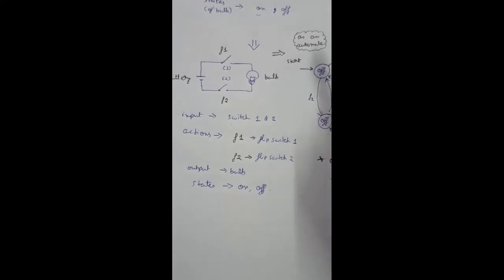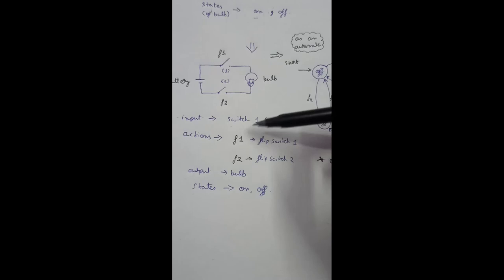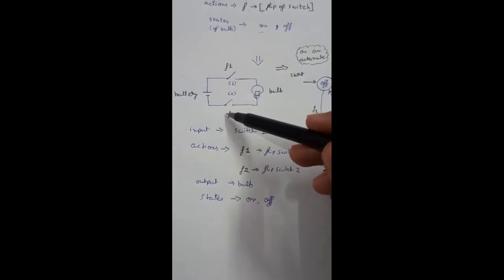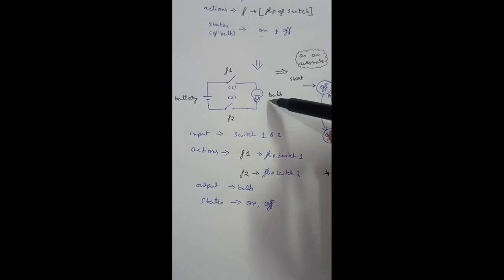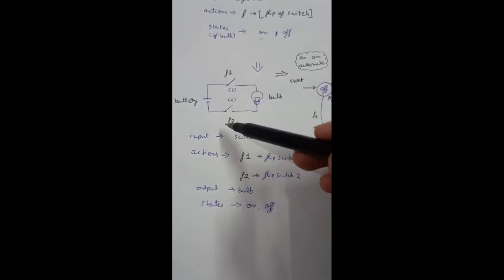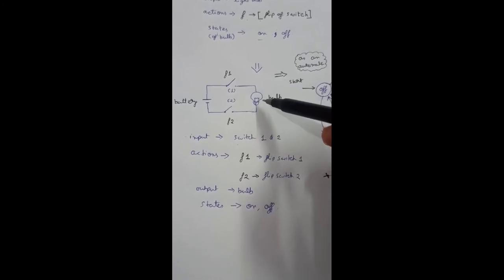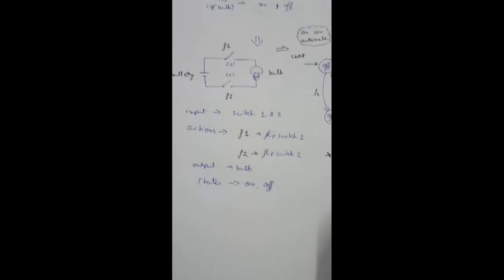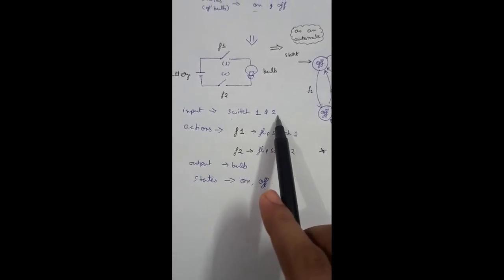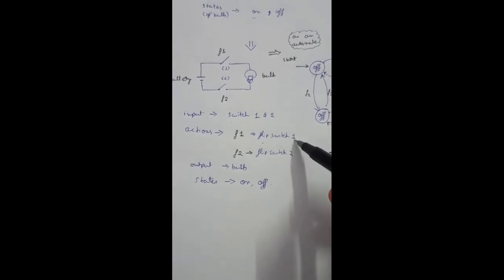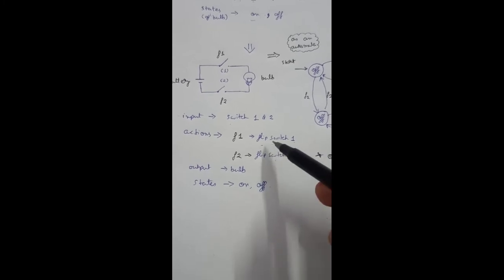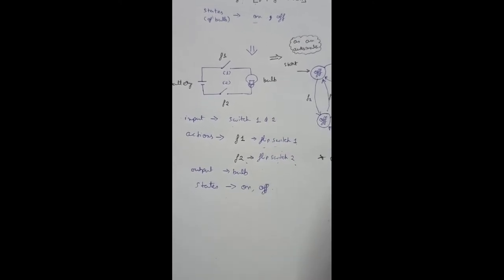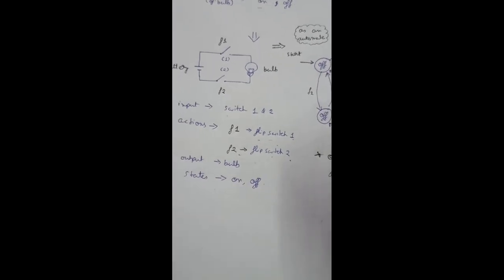Now let's move forward and make it a bit more complex. Here you can see a very similar circuit, but the difference is we have two switches: switch one and switch two. The battery is connected to switch one and switch two, and the two switches are connected to the bulb. If switch one is on and switch two is off, the bulb will also be off — both switches need to be on simultaneously for the bulb to turn on.